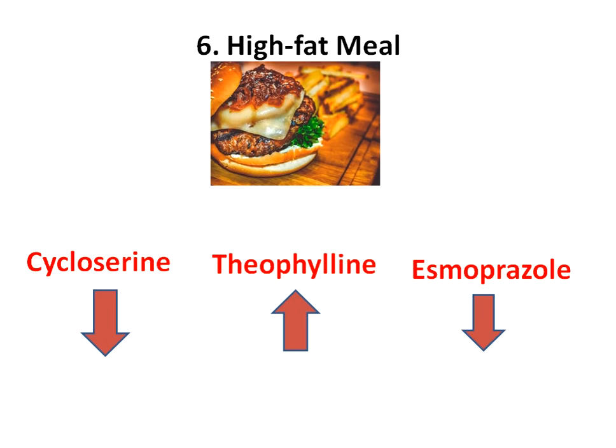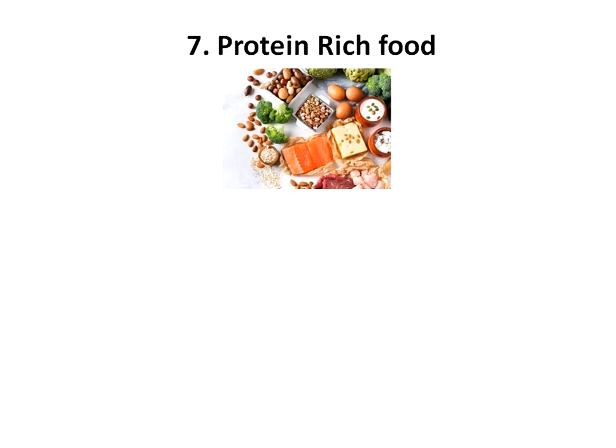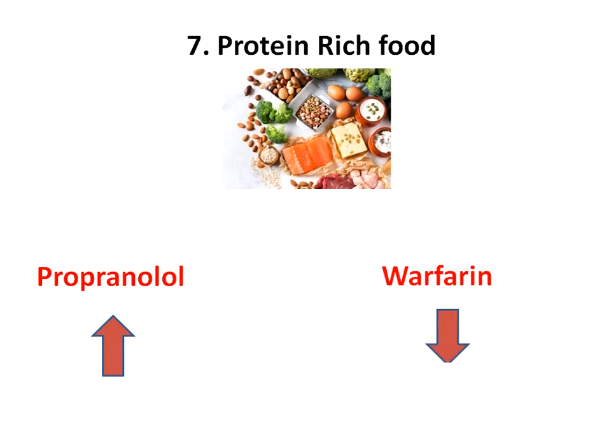Seventh, protein-rich food. Two drugs are affected by protein-rich food. First, propranolol serum levels may be increased if taken with protein-rich food. Propranolol is a beta-blocker used to treat tremors, chest pain, hypertension, and other heart or circulatory conditions. Second, a high-protein diet has been shown to increase serum albumin levels, which may result in more warfarin binding to serum albumin, thereby decreasing the anticoagulant effect of warfarin. Thank you.